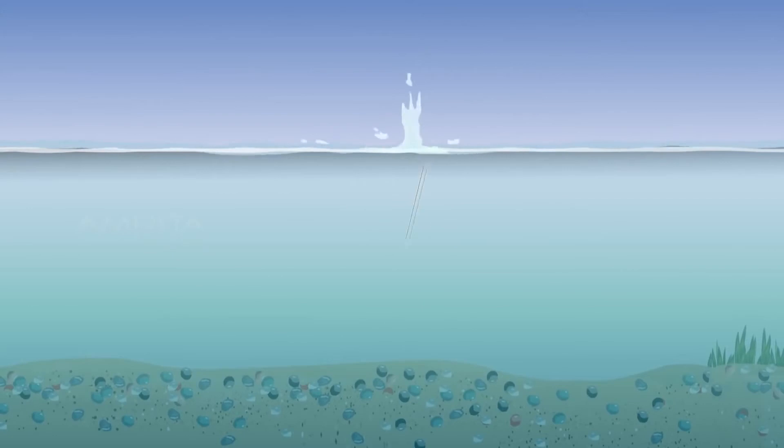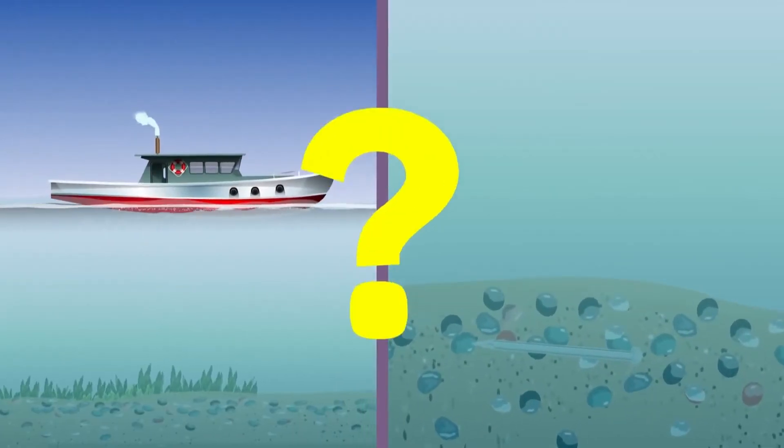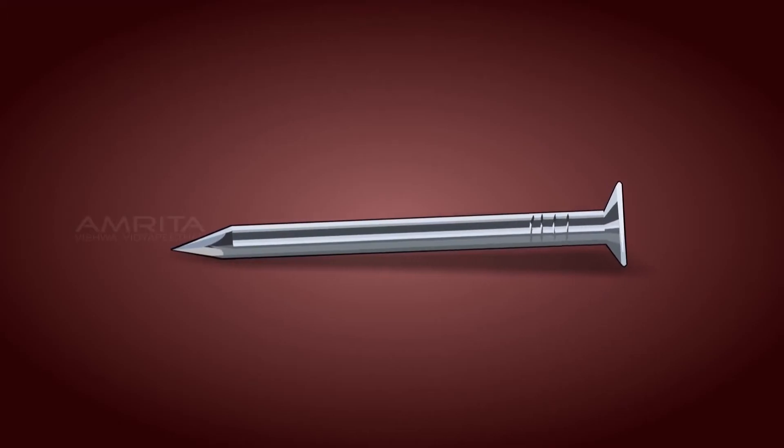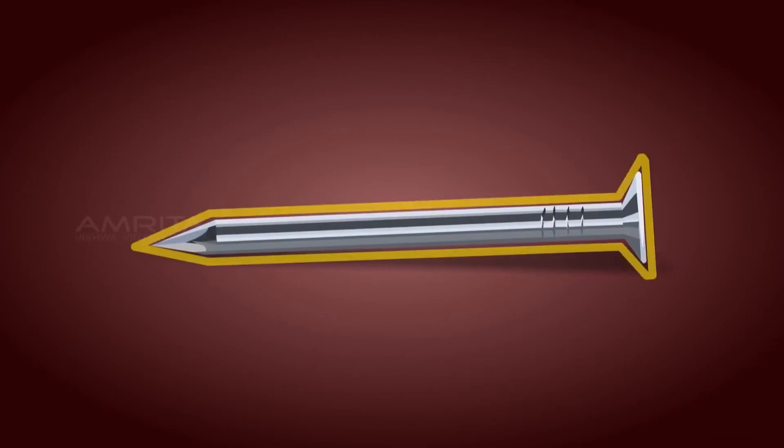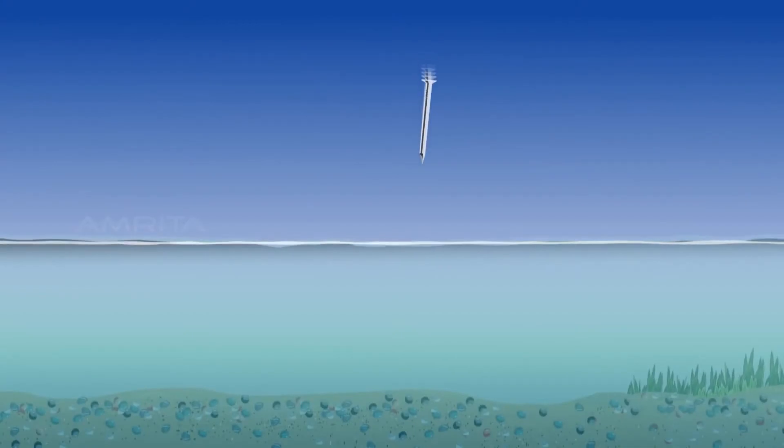Have you ever wondered why an iron nail sinks while a huge iron ship floats on water? Let's see. The iron nail sinks as it is solid and compact with less volume in water and its density is greater than water. Thus the upthrust exerted by water on the nail is less than the weight of the nail. This causes it to sink.